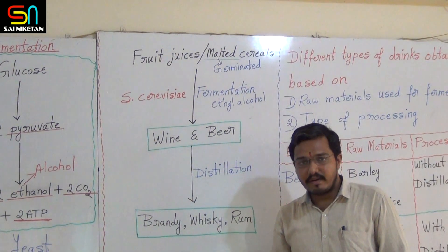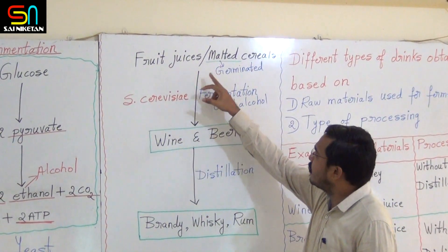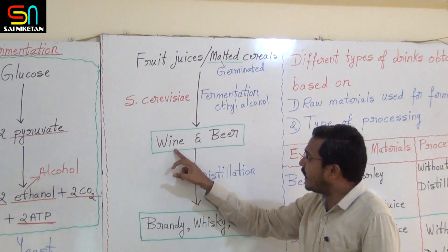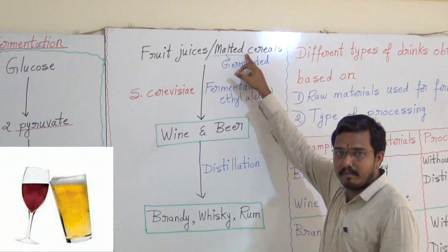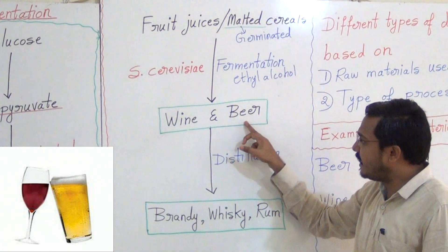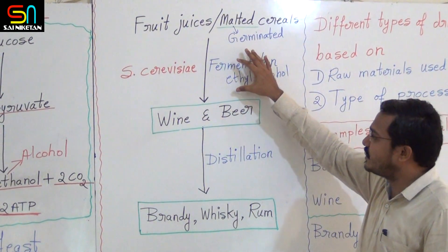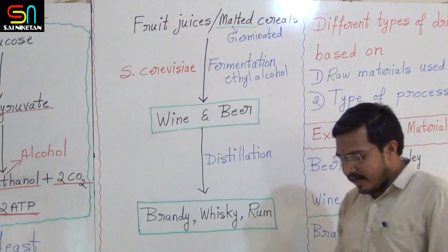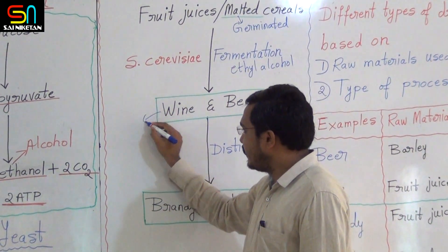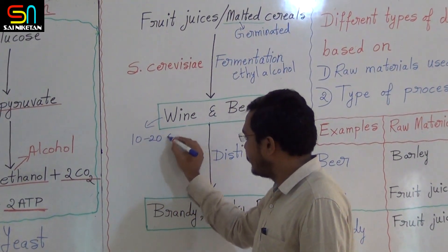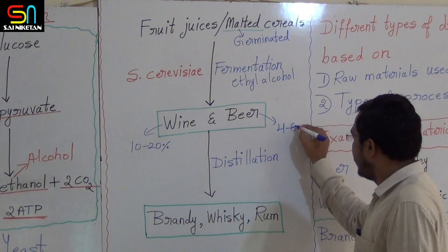After 10 to 15 days of fermentation in the tank, if fruit juices are used, then wine is produced. If malted cereals — especially barley — are used, then we get beer. So wine and beer are produced in fermenters. Wine has an alcohol content of 10 to 20 percent, while beer has an alcohol content of 4 to 8 percent.